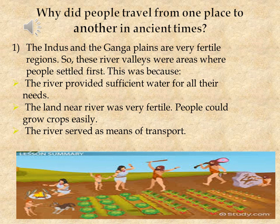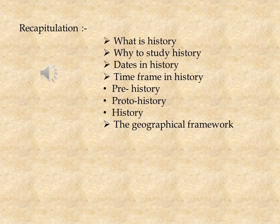Why did people travel from one place to another in ancient times? The Indus and the Ganga plains are very fertile regions, and so is the valley of river Narmada. These river valleys were the areas where people settled first, because the river provided sufficient water for all their needs. The land near rivers was very fertile, so people could grow crops easily. The river also served as a means of transport. Areas where the environment is favorable are densely populated.